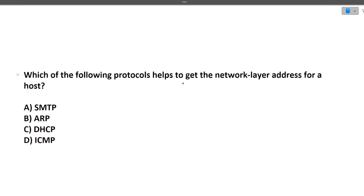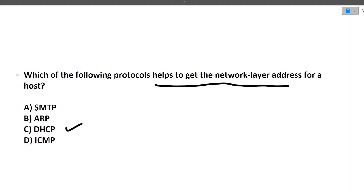Next question: which protocol helps to get a network layer address for a host? The answer is DHCP — Dynamic Host Configuration Protocol. The name itself says it is a dynamic host configuration, so DHCP is the correct answer here.